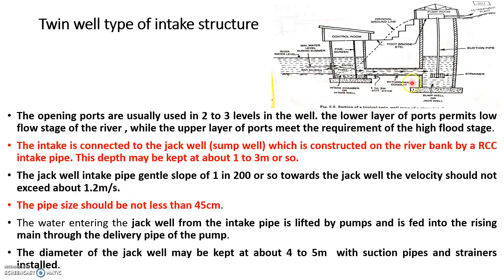The pipe size should not be less than 45 centimeters. If it is less than that, debris may enter and the pipe may become choked, causing many problems to the intake structure. Water enters through this jack well, and from the jack well there is a pump which takes the water out and delivers it to a treatment unit. The jack well may have a diameter of four to five meters. This is all about the twin well type of intake structure, which some books also call a twin tower intake.